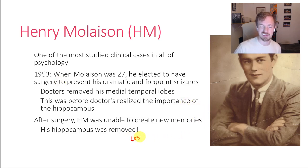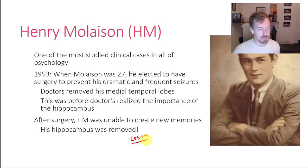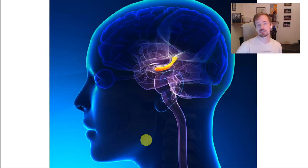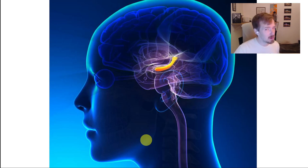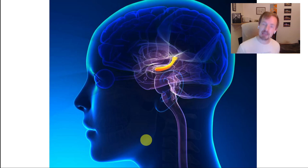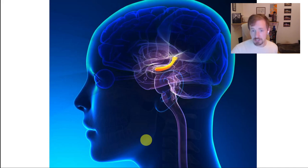We now call this a lesion study, where a part of the brain has been altered and we can infer what that part does by seeing the impact on behavior. In this case, the hippocampus must be really important for memory because we can see what happens when it's removed. Henry Molaison is an incredibly important figure in the history of psychology — not just for our understanding of memory, but also in our understanding of ethics. This is a man who can't create new memories and yet was being tested on, raising questions about consent.